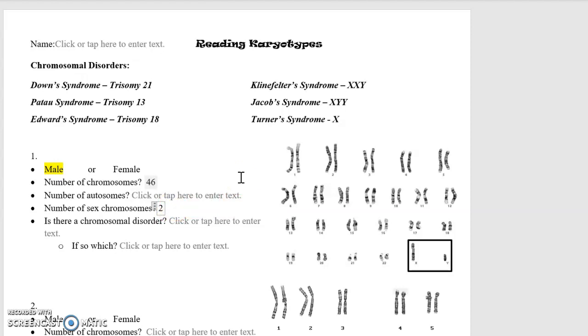Now that might be different in other individuals that have disorders in the sex chromosomes like Klinefelter's, Jacobs, or Turner's syndrome. Now that I know I have two chromosomes, two out of my 46 are sex chromosomes.